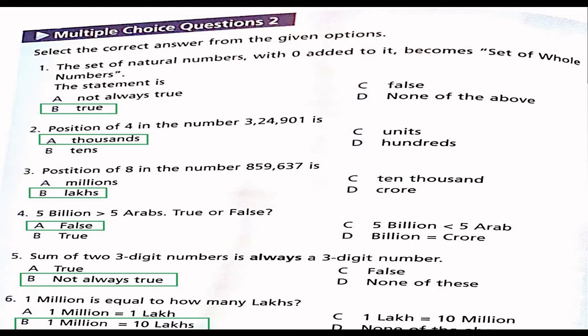Question 4: Five billion is greater than five Arabs. True or false? Option A false, option B true, option C 5 billion is less than 5 Arab. B billion is equal to crore. Option A is the right answer because both are equal. 1 billion is equal to 1 Arab. Therefore 5 billion is equal to 5 Arab. The right answer is option A.